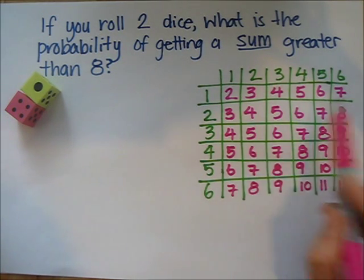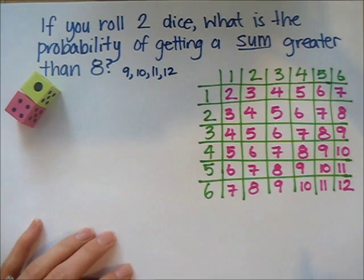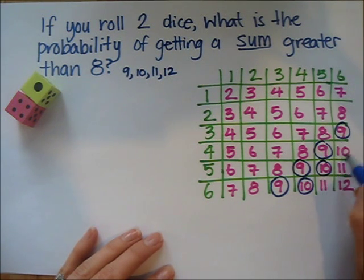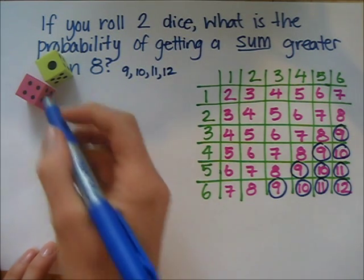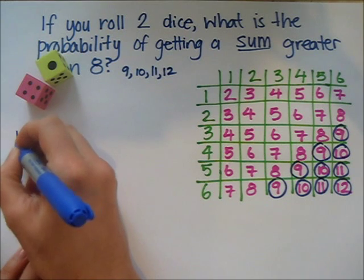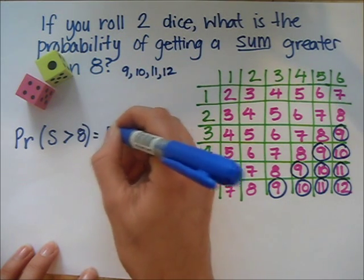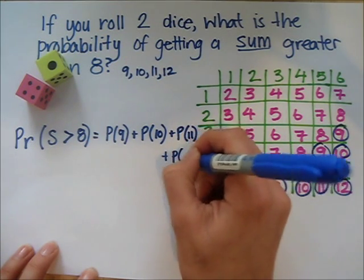We can see there are 36 different possible outcomes. We want the probability of a sum greater than eight — that means the numbers nine, ten, eleven, or twelve. There are four different ways to get nine, three different ways to get ten, two ways to get eleven, and one way to get twelve. So the probability of a sum greater than eight equals the probability of nine plus ten plus eleven plus twelve.